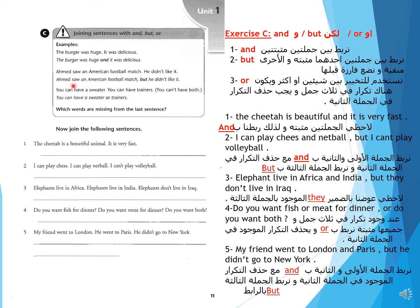You can't have a sweater. You can't have a trainer. You can't have both. In the second sentence, we remove the repetition: You can't have a sweater or trainers.